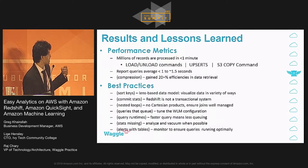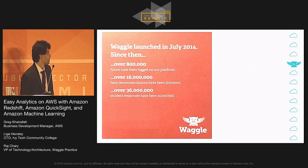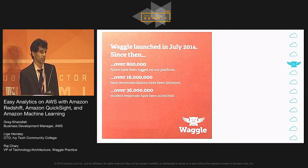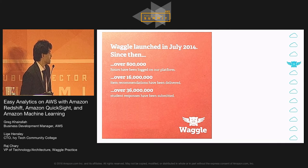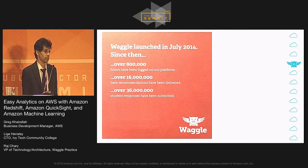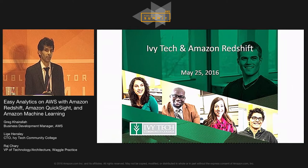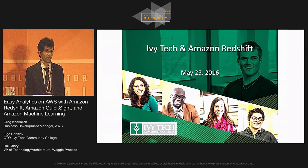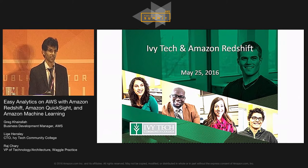Since launching WAGL in July 2014, we've clocked over 800,000 hours in the system, over 36 million student responses submitted, and over 16 million question recommendations made to students on a daily basis. We're excited about what we're doing at WAGL with AWS to build this platform and help shape the future of education.